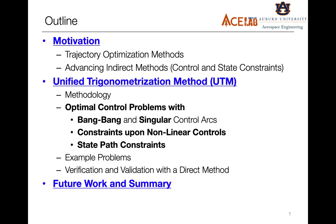Using these six steps, we can solve optimal control problems pertaining to three different classes. In the first class, the controls appear in a bang-bang and/or singular form. In the second class, the constraints are upon the controls and the controls appear in a non-linear form. In the third class, which is the most complicated, the constraints are upon the states of the problem. For each of these three classes, I will be showcasing an example of how to implement the UTM.